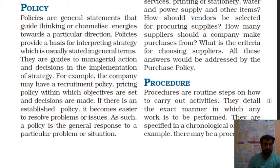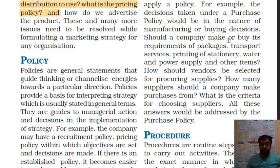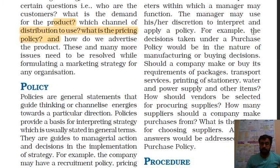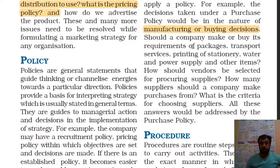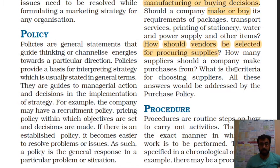Before starting with policies, let me take some examples of what a policy is from MCRT&C. The decisions taken under a purchase policy would be in the nature of manufacturing or buying decisions. Should a company make or buy its requirements for packages, transport services, printing of stationery, water and power supply, and other items? How should vendors be selected for procuring supplies? How many suppliers should a company purchase from?